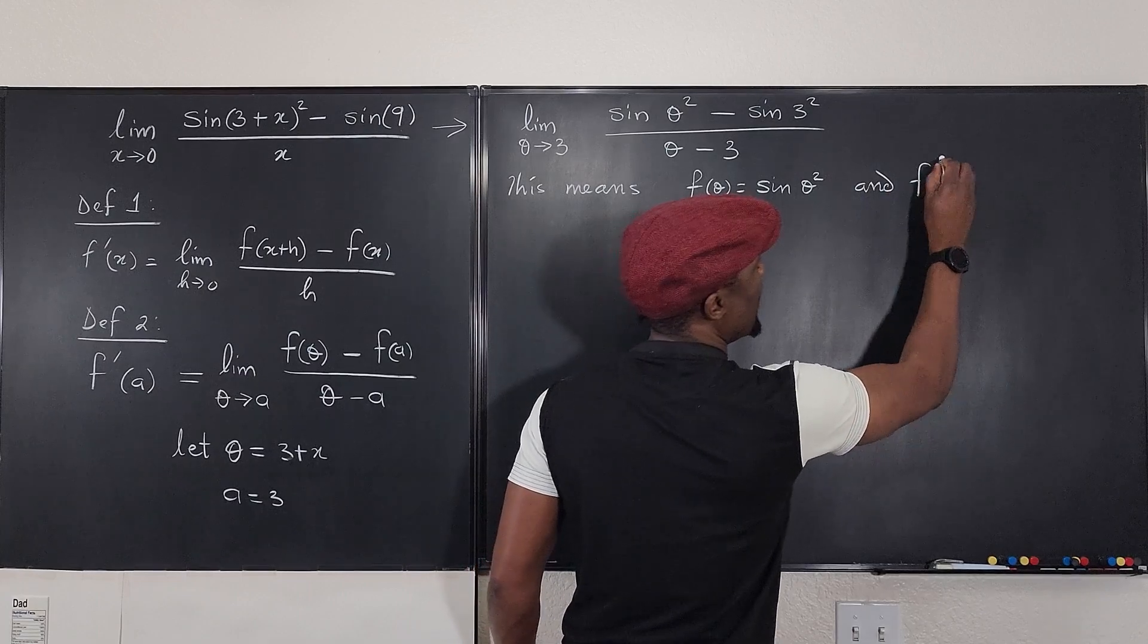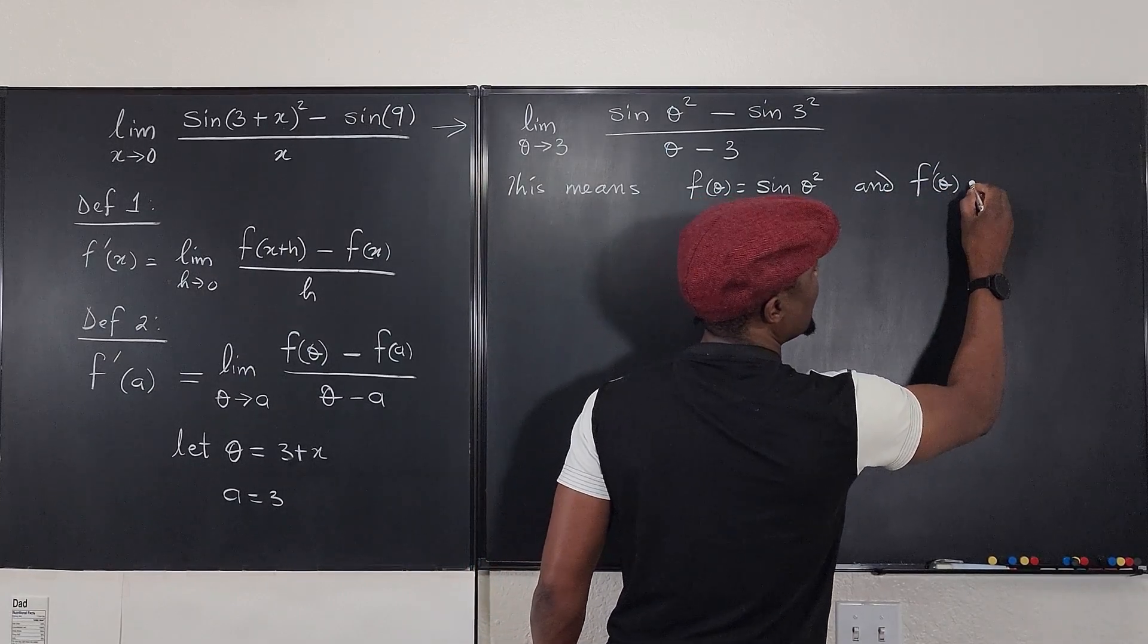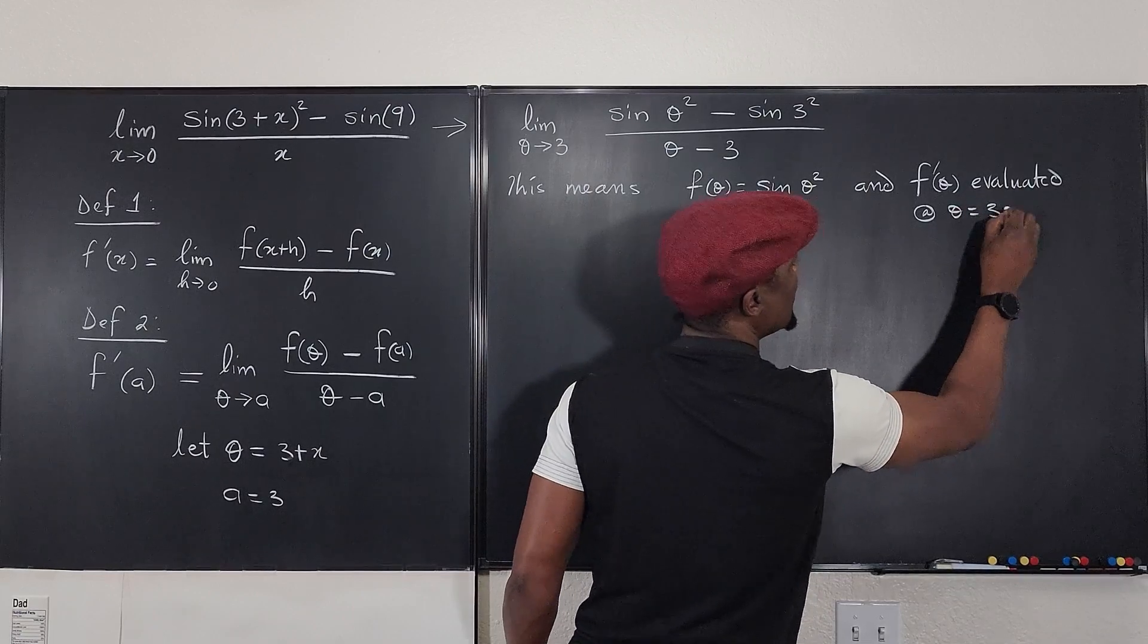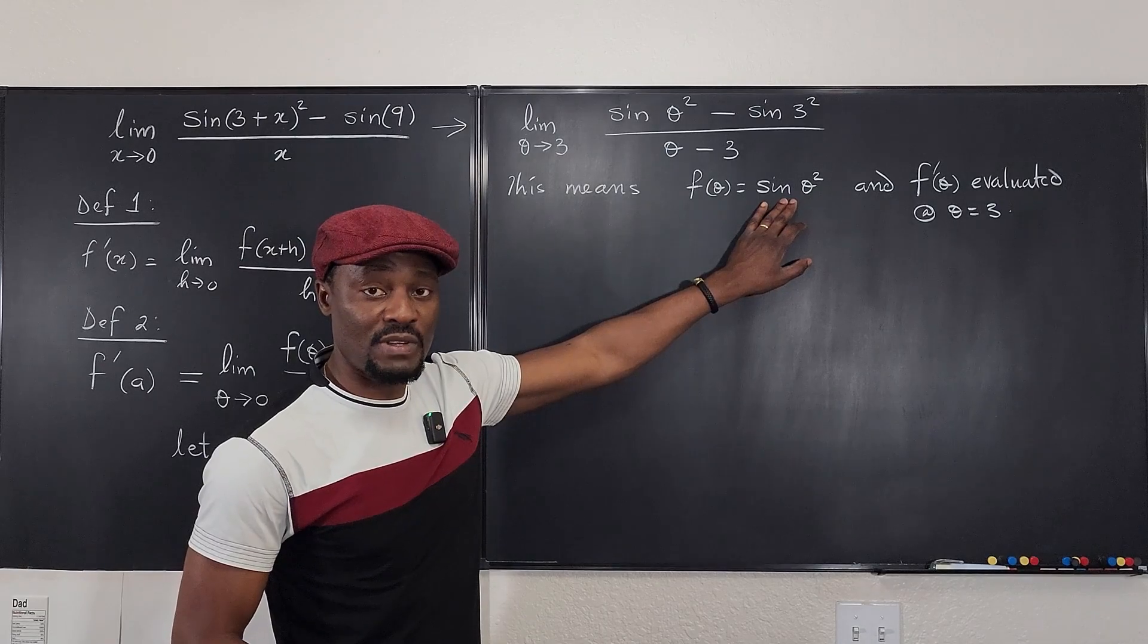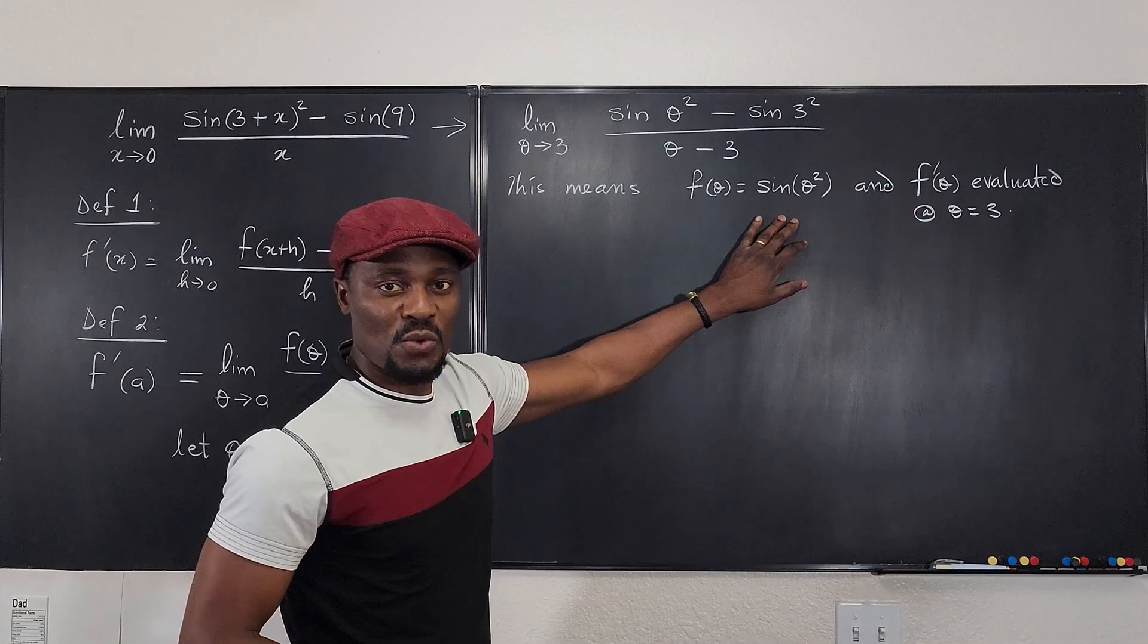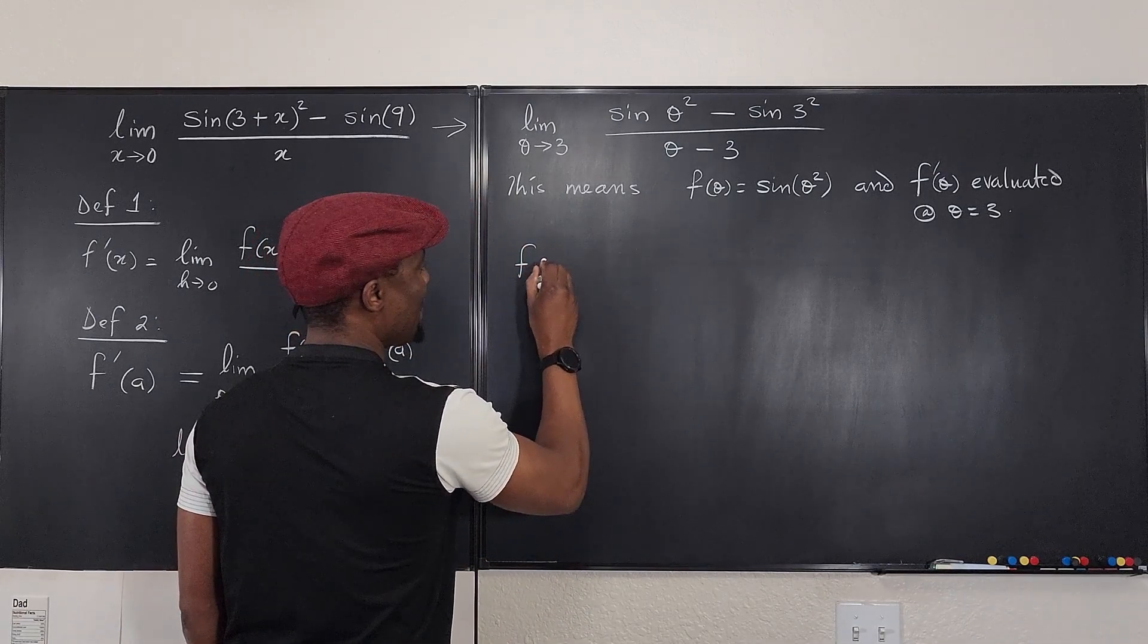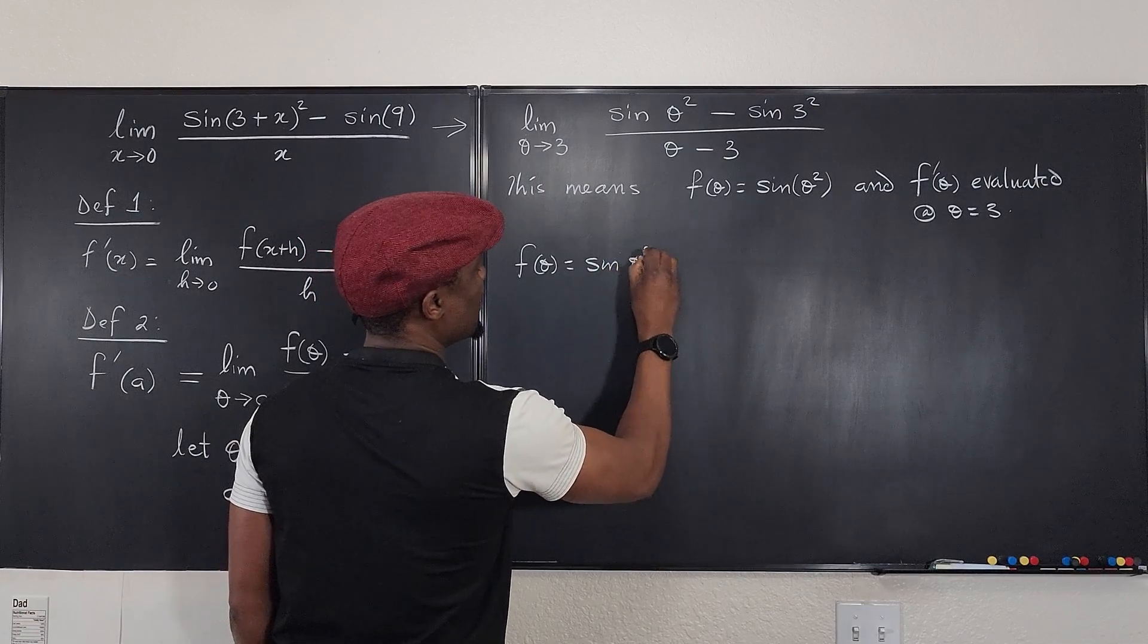this means f of theta equals sine theta squared. And f prime of theta evaluated at theta equals 3. So clearly, if you can differentiate this or find the derivative of this function and you plug in 3 after getting the derivative, you're good. So what we're going to do is just differentiate this and plug in theta equals 3. So we know that f of theta equals sine theta squared.